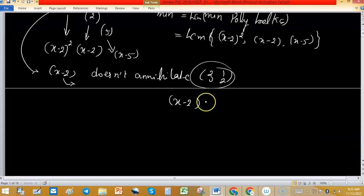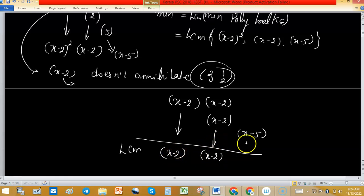So (x minus 2) times (x minus 2), next x minus 2, and x minus 5. To find LCM: x minus 2 comes once, x minus 2 comes again, and x minus 5. So (x minus 2) whole square times (x minus 5).